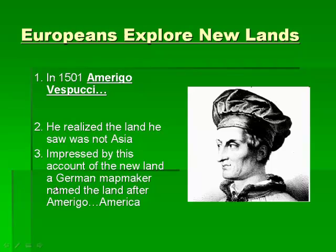After Columbus, there are more Europeans who explore the new lands. In 1501, Amerigo Vespucci set out to find Asia just like Columbus did. He gets there and actually lands on the mainland of North America, and he realizes that this land is not Asia. Impressed by his account of the new lands and his recognition that it's not Asia, a German mapmaker names the land after Amerigo and calls it America. That's who North America and South America are named after.